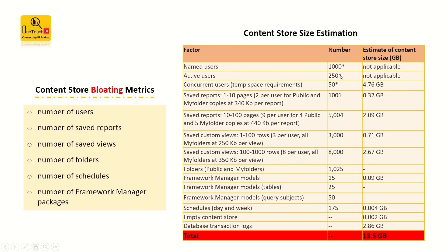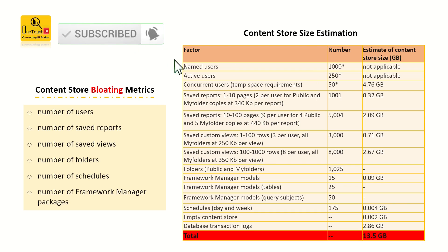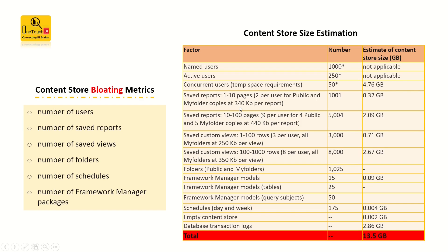For named users, assume you have 1,000 users configured for your Cognos connection portal. Out of 1,000 users, assume 250 are active users, and out of those, 50 are concurrent users accessing reports at any given time. In that case, the temp space recommended for Cognos to process aggregated data is about 4.76 GB. For saved reports of 1 to 10 pages, two per user in public and My Folders — approximately 340 KB per report — and with 1,001 reports considered, that is 0.32 GB.